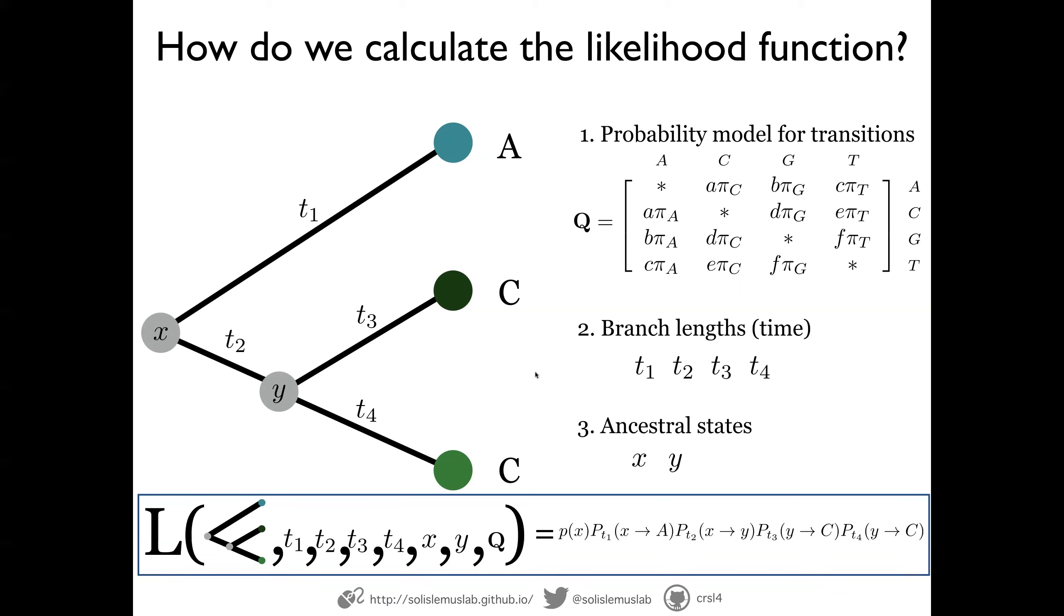And then these transitions are obviously governed by the Q matrix, all the parameters in the Q matrix. This is the likelihood model. So for those that are familiar with continuous time Markov model, this is a continuous time Markov model. And this allows us to calculate the likelihood.